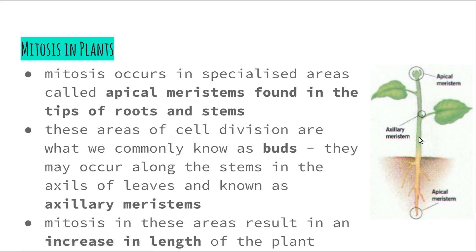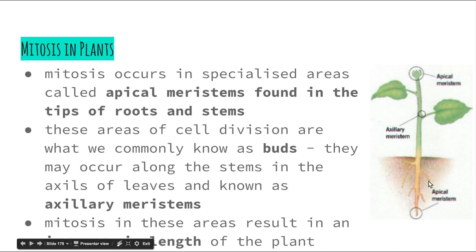Mitosis in these areas results in an increase in the length of the plant, growing upwards through the apical meristem on the stem and growing downwards into the ground through the roots.